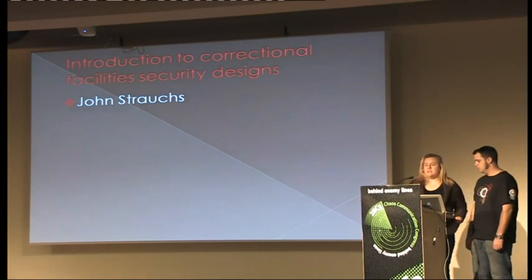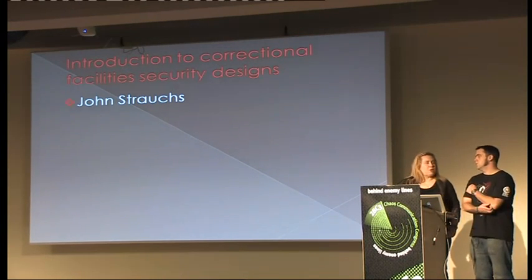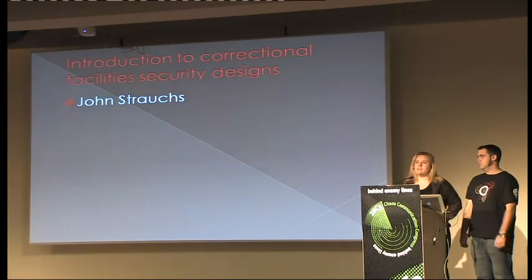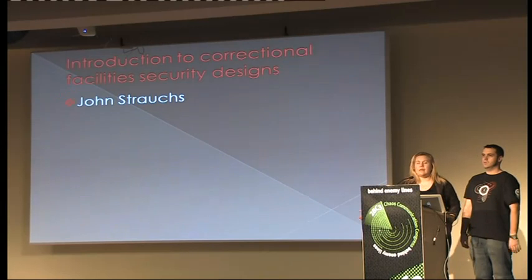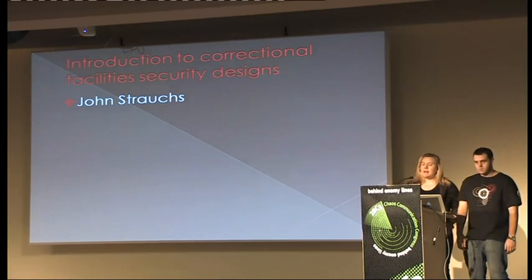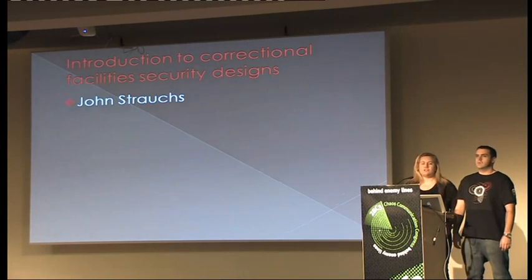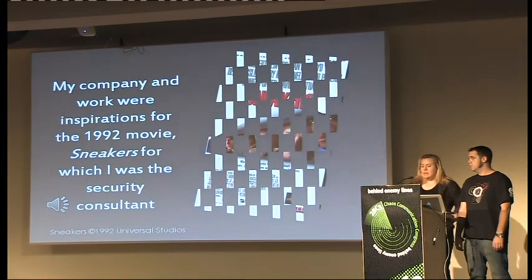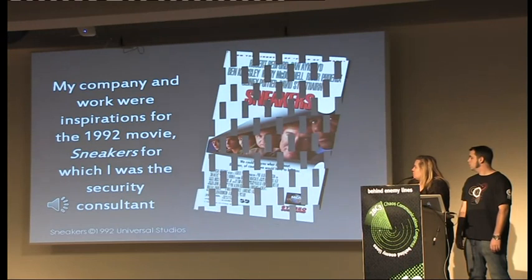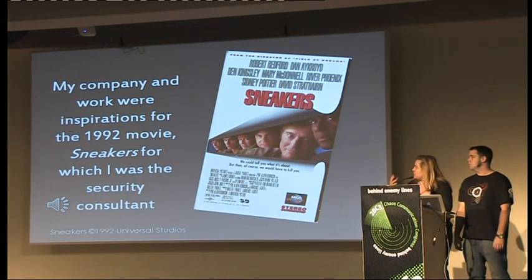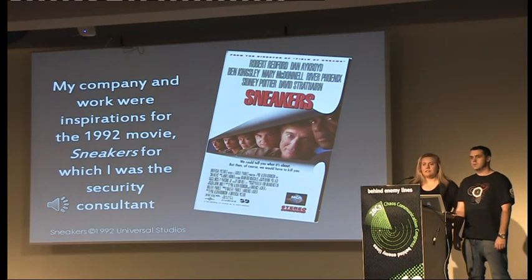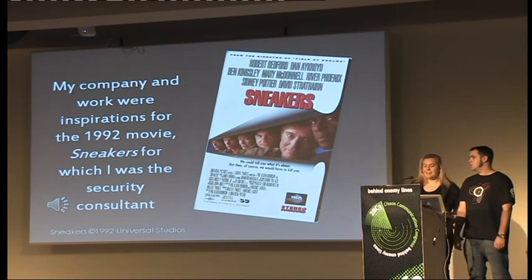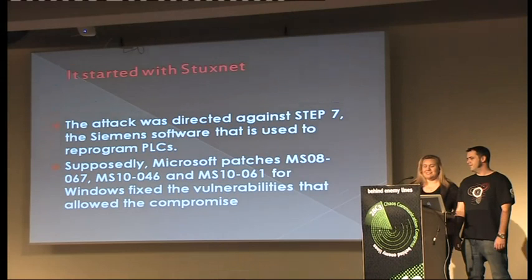Introduction to correctional facilities and security designs — understanding what a vulnerability is means you have to understand not just the technology, like how to do ladder logic for the PLC, but the design of the prison. A prison is a state or federal facility for long-term confinement, typically over a year. A jail is typically confinement of under a year — leading up to trial, potentially, or for smaller crimes. Just because it's a jail does not mean you may not have big criminals in there; you may have murderers in jail awaiting trial to then be transferred to prison.